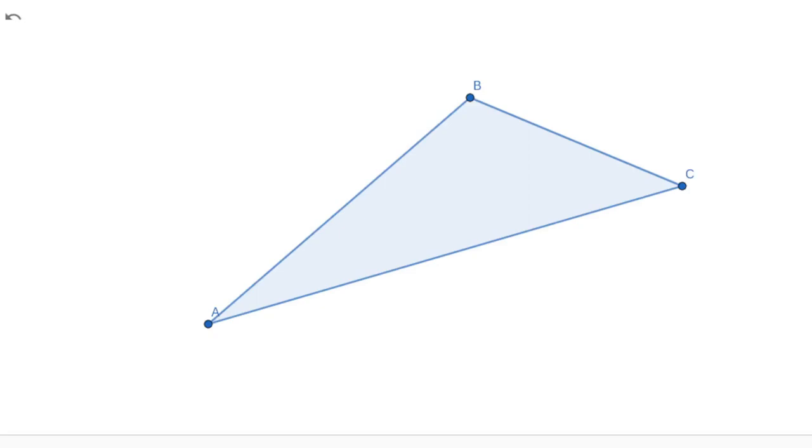Consider an arbitrary triangle ABC. Think about starting at one of the points and walking around that triangle until you get back to the starting point.